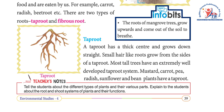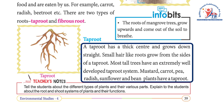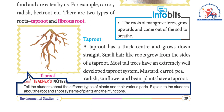There are two types of roots: taproot and fibrous roots. The roots of mangrove trees grow upward and come out of the soil to breathe. A taproot has a thick center and grows straight down. Small, hair-like roots grow from the sides of a taproot. Most tall trees have an extremely well-developed taproot system. Mustard, carrot, pea, radish, sunflower, and bean plants have a taproot.